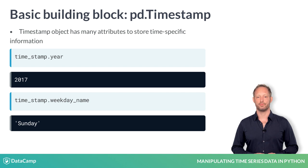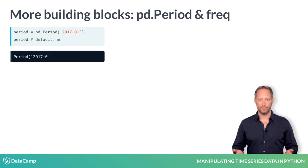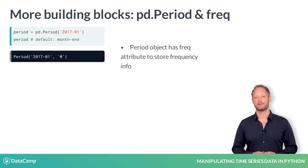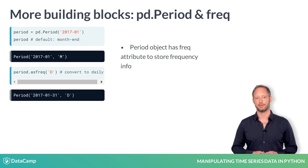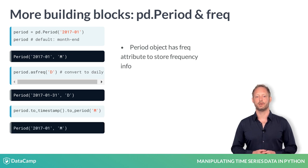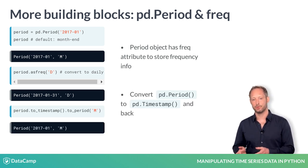Pandas also has a data type for time periods. The period object always has a frequency, with month as the default. It also has a method to convert between frequencies, for instance from monthly to daily frequency.